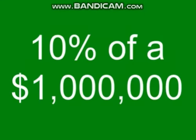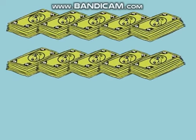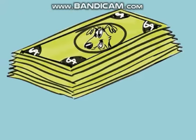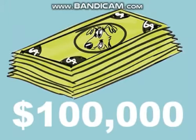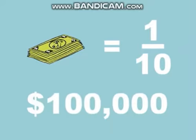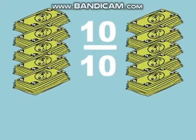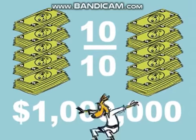To find 10% of a million dollars, we simply move the decimal point one place to the left. If we had 10 stacks of cash on a table and each stack was a hundred thousand dollars, we would have a million dollars. One stack equals one tenth, which is one hundred thousand dollars. Ten over ten would be all ten stacks — a cool one million dollars!